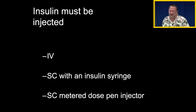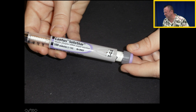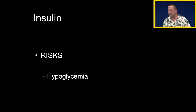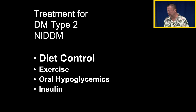Insulin must be injected — we can do it IV or with an insulin syringe. A metered-dose pen injector allows the person to dial in the dose they want — here they're dialing in 18 units of Lantus — so they don't have to do calculations when drawing it up. The risk of insulin is its therapeutic extension: hypoglycemia. We can give them too much insulin to where they become hypoglycemic.